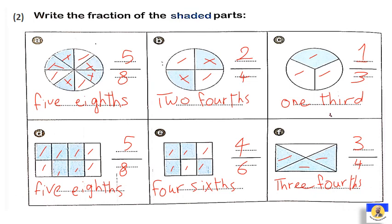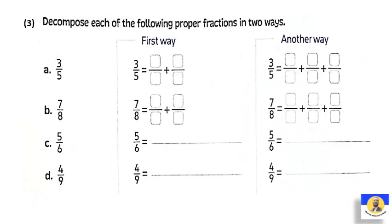احنا كده بقينا نتعود إن احنا بنطلع على الـ shaded part — how many shaded — over the total parts عندنا. Question number 3: decompose each of the following proper fractions into two ways. Proper fraction means إن النمبر up smaller than number down — ده اسمه proper fraction. طالب مني proper fraction عمله decompose — يعني فككوه لحدتين صغنانين.